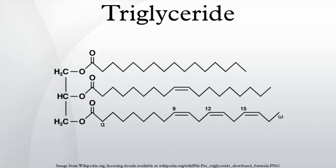The three fatty acids are usually different, but many kinds of triglycerides are known. The chain lengths of the fatty acids in naturally occurring triglycerides vary, but most contain 16, 18, or 20 carbon atoms. Natural fatty acids found in plants and animals are typically composed of only even numbers of carbon atoms, reflecting the pathway for their biosynthesis from the two-carbon building block acetyl-CoA. Bacteria, however, possess the ability to synthesize odd- and branch-chain fatty acids. As a result, ruminant animal fat contains odd-numbered fatty acids, such as 15, due to the action of bacteria in the rumen.